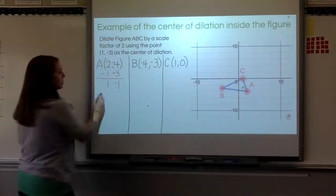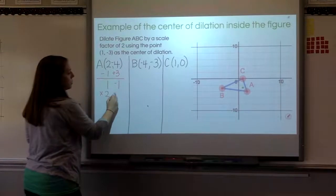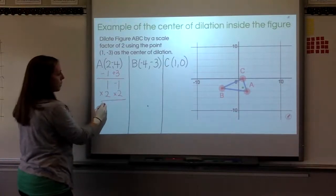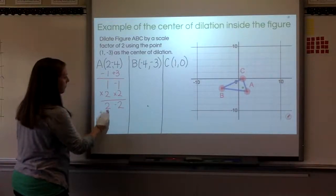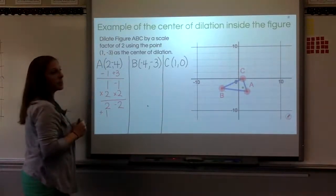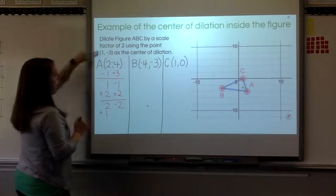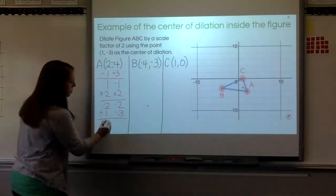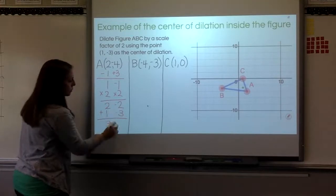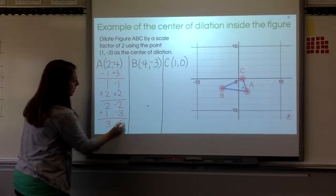Now my scale factor is 2, so I'm going to multiply each of them by my scale factor of 2, and I end up with 2, negative 2. I have to add back my center of dilation coordinate. So I'm adding 1, and then here I'm actually going to subtract 3. So 2 plus 1 is 3, negative 2 minus 3 is negative 5.